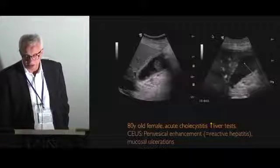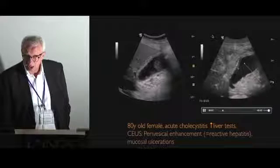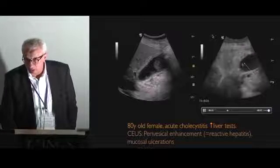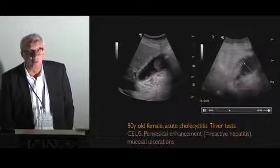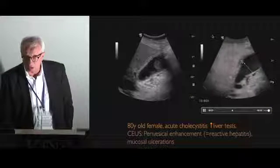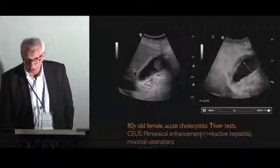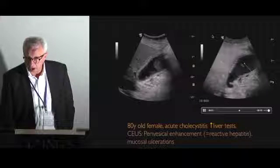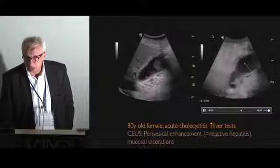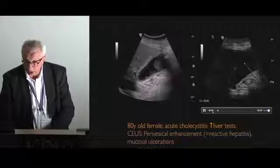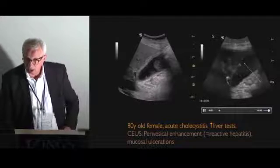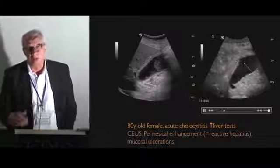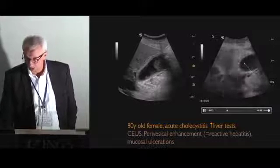This is another patient also with elevated liver tests. What you can see here are ulcerations of the wall. We can expect perforation if we do not perform treatment and cholecystectomy, because this is the first step to perforation of the gallbladder. When the contrast arrives, you can see the perivasicular enhancement — the reactive hepatitis. This is one of the first things you can see when inflammation goes beyond the gallbladder wall.